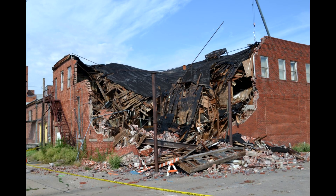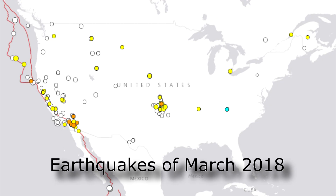There was a 5.8 earthquake in central Oklahoma in 2016 that did some damage, and it's a matter of when, not if, there'll be a 6.0 earthquake in Oklahoma City. A 6.0 earthquake in Oklahoma City will do a lot more damage than that 6.0 earthquake in Napa back in 2014.